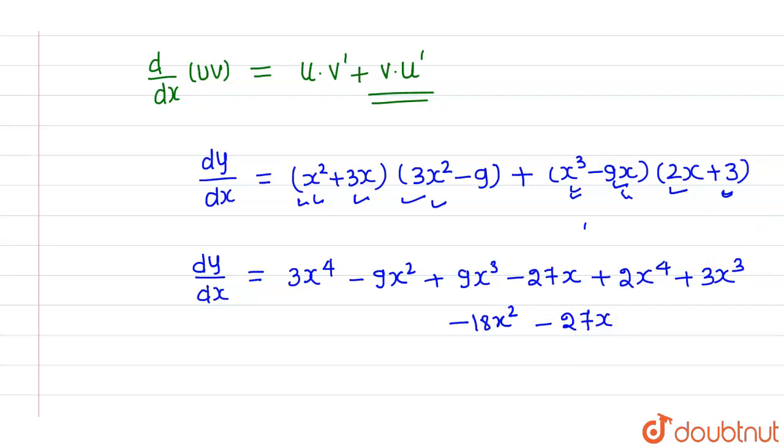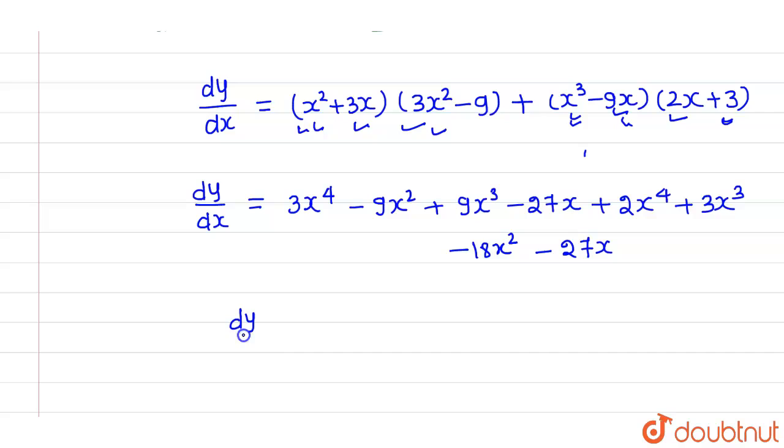Okay, now if you simplify this, then you will be getting dy over dx as, now this x raised to power 4 and this one is also x raised to power 4. So these two will add on and this will give us 5x raised to power 4. Okay, now taking cube terms, so this is 9x cube and this is 3x cube, so overall we will be getting 12x cube, so plus 12x cube.